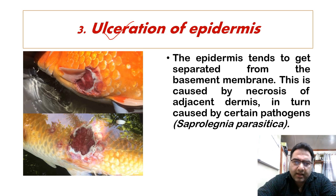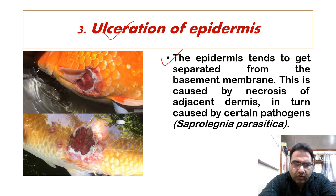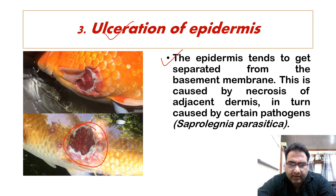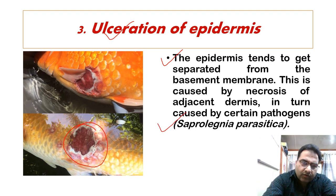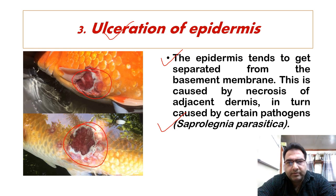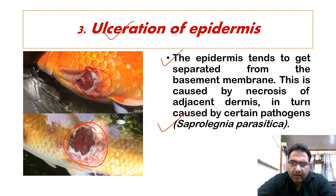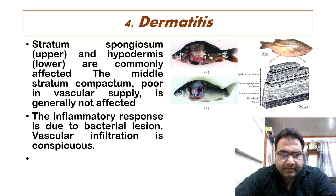Ulceration is another important pathological condition. In this case the epidermis tends to get separated from the basement membrane, and this is caused by necrosis of the adjacent dermis and in turn by certain pathogens, such as Saprolegnia parasitica. The necrosis of the skin is clearly visible in the picture — that is the ulceration of the epidermis.